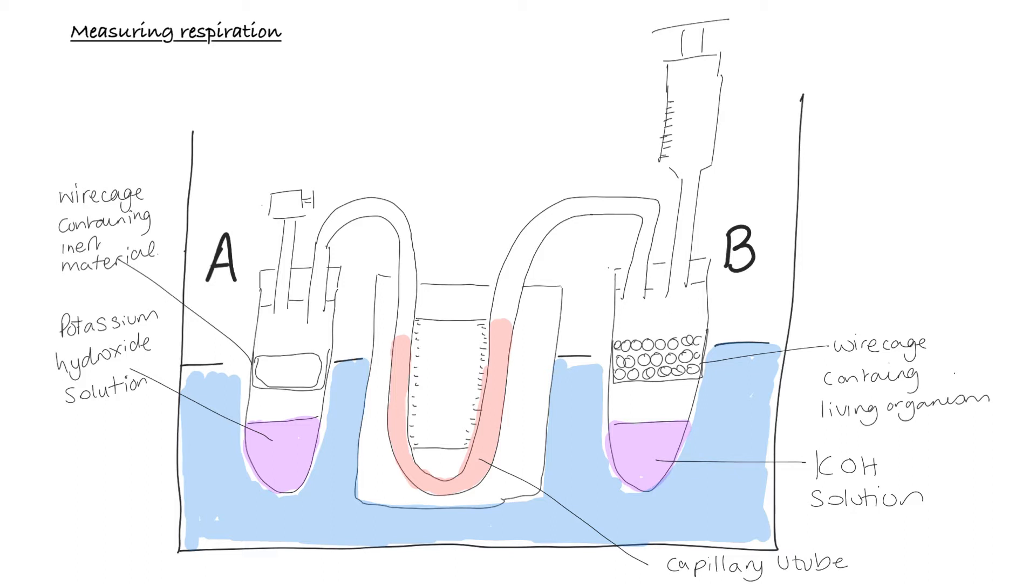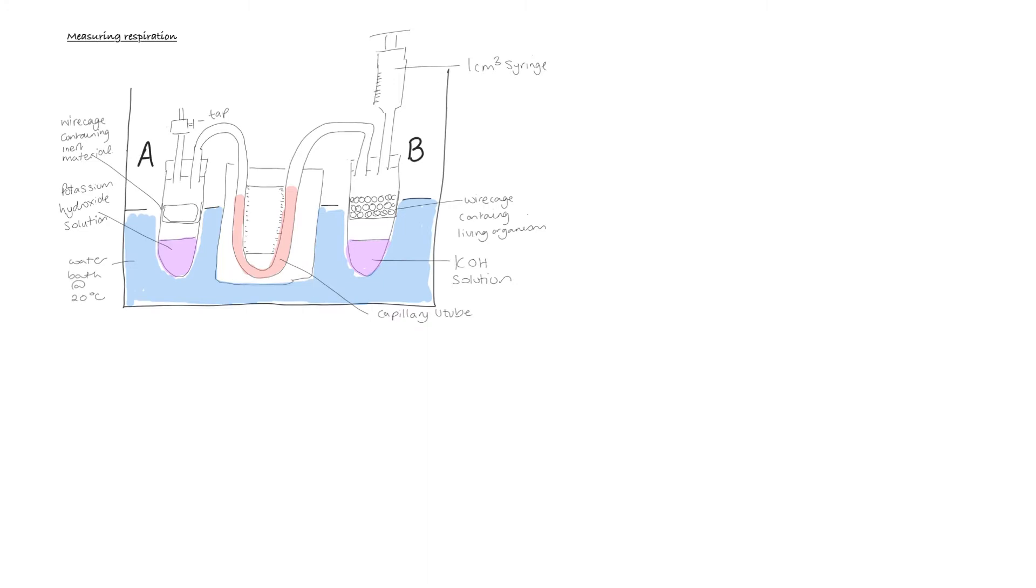We've put the whole thing in a water bath, which is set at 20 degrees. This is to ensure that the temperature remains constant throughout the experiment, and so that temperature fluctuations do not affect the rate of respiration, and therefore do not affect the results, and also that temperature fluctuations do not affect the volume of the liquid inside the tubes. And then at the top, we've got this one centimetre cubed syringe. Although this isn't important for carrying out the experiment itself, this is important so that you can reset the level of the liquid between each repeat of the experiment.